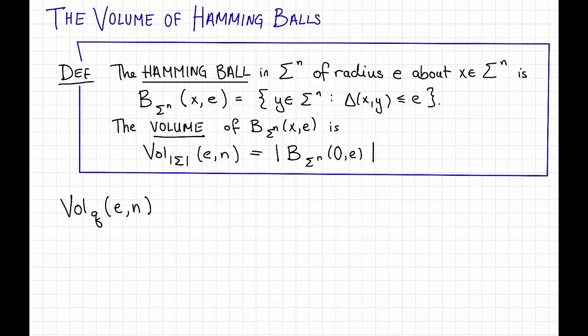In general throughout this class q is typically going to be the size of sigma. So this is just 1 plus n choose 1 times q minus 1 plus n choose 2 times q minus 1 squared plus dot dot dot plus n choose e times q minus 1 to the e.